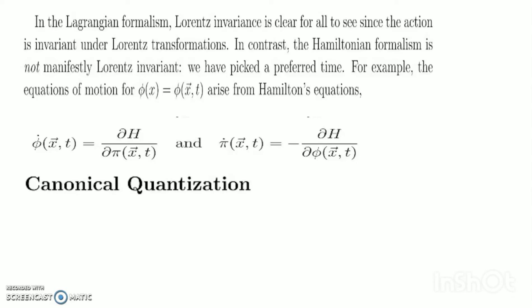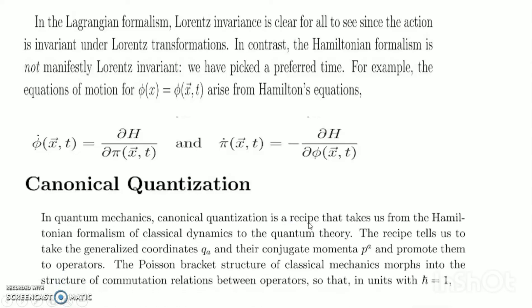Now we discuss canonical quantization. In quantum mechanics, canonical quantization is a recipe that takes us from the Hamiltonian formalism of classical dynamics to the quantum theory. The recipe tells us: take the generalized coordinates q_a and their conjugate momenta p^a, and promote them to operators. The Poisson bracket structure of classical mechanics morphs into commutation relations between operators, so that in units where h-bar equals 1.